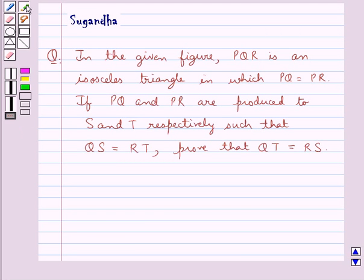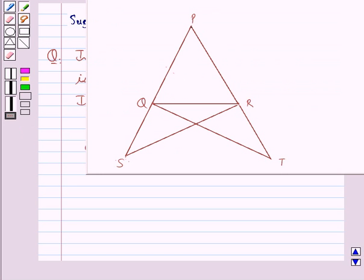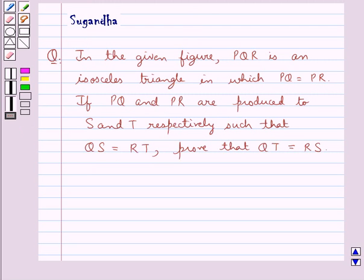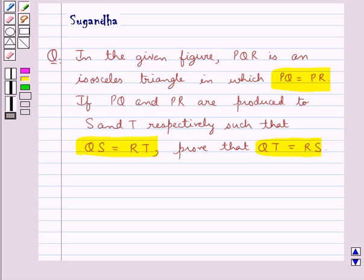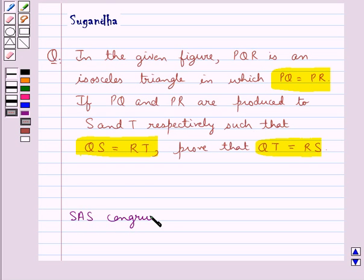Hello and welcome to the session. In this session we discuss the following question: in the given figure, PQR is an isosceles triangle in which PQ is equal to PR. If PQ and PR are produced to S and T respectively such that QS is equal to RT, prove that QT is equal to RS.